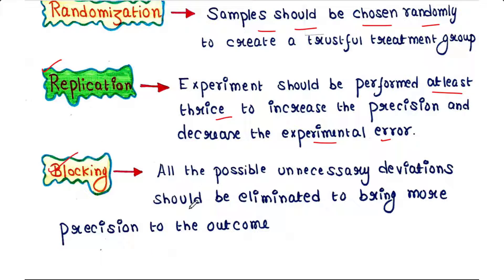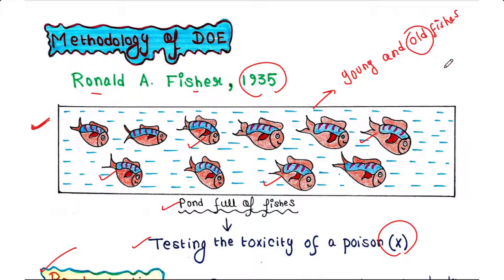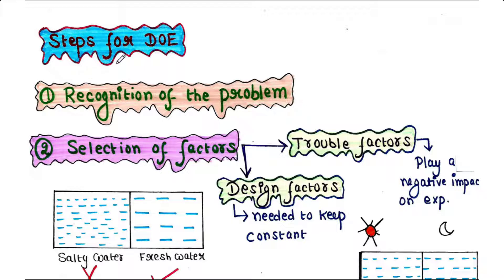Next is blocking. In order to bring more precision to the outcome, all possible unnecessary deviations must be addressed. Suppose this fish population contains both young and old fishes — old fishes are more sensitive to the poison compared to young ones. In that case the result would not be precise, so we have to collect only old fishes or only young fishes to undergo the experiment.